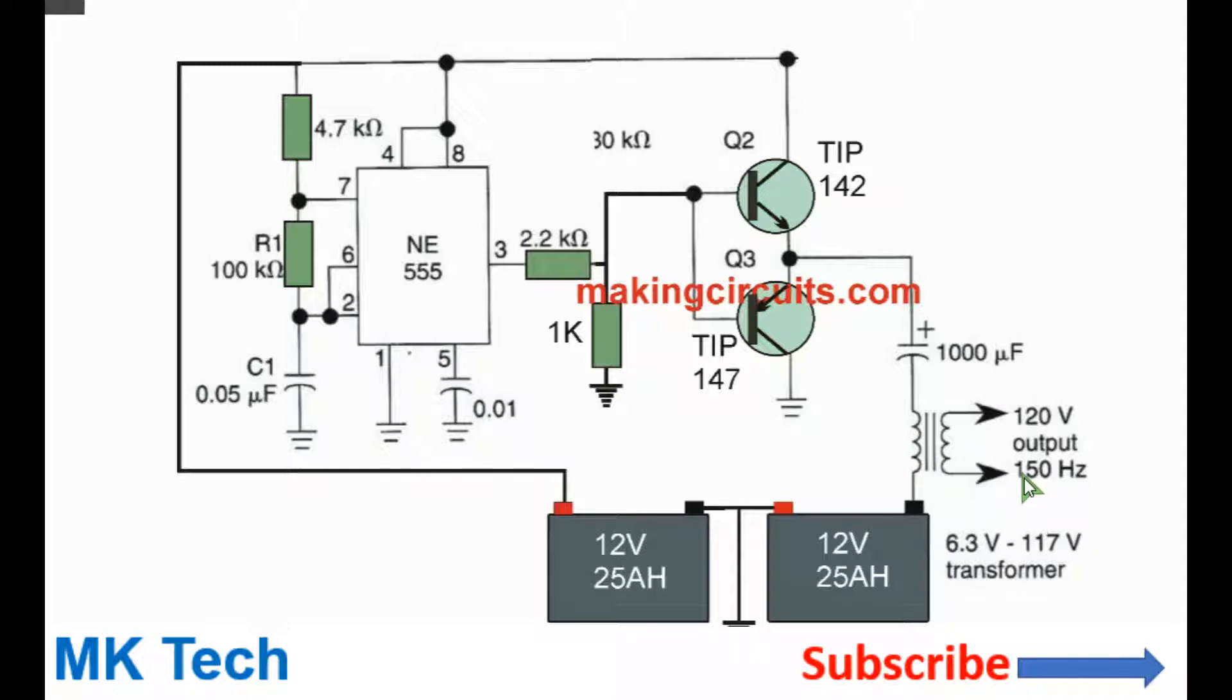For the transformer, you can use a transformer with a transformation ratio of 1 is to 20 if you want a 12 volt to 240 volt or 120 volts output.